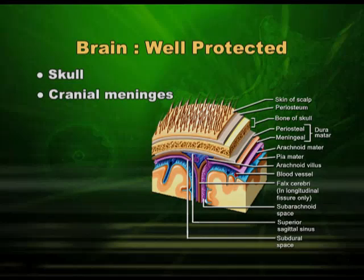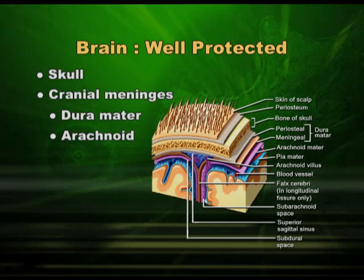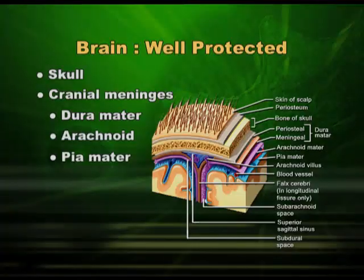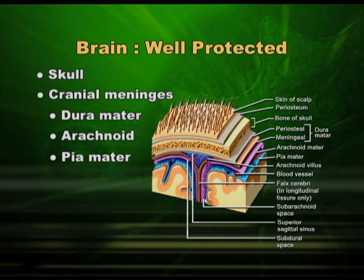Now, these meninges are named dura mater, arachnoid, and pia mater. Dura mater is the first meninges present just after the skull, and pia mater is the membrane present just outside the brain tissue. Between the two is a thin membrane called arachnoid. A fluid is filled between these membranes. You can imagine that the skull is hard and the brain tissue is very, very soft. Between these two, there are three membranes enclosing two compartments which are filled with fluid, supplying a cushion to the brain tissue.